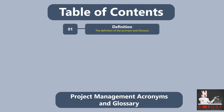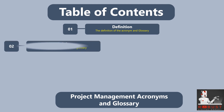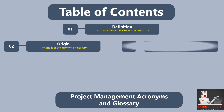Definition: We start by providing a clear and concise definition of the acronym or glossary term, highlighting its significance in the field. Origin: We discuss the origin or source of the acronym or glossary term, providing relevant background information or historical context to help you understand how it emerged.